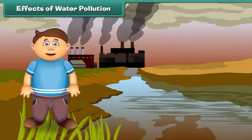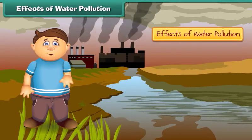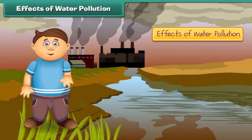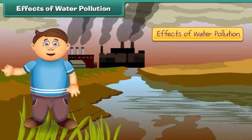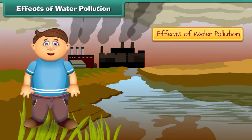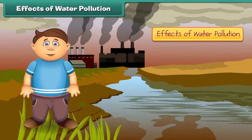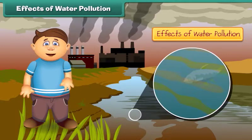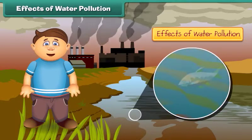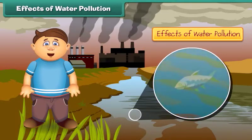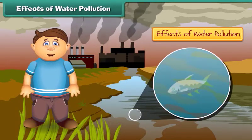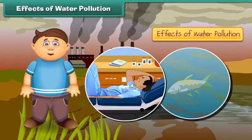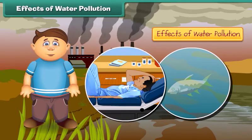What are its effects? Poisonous chemicals released from factories and industries enter the water bodies, due to which marine life is getting affected. If we consume such fish, we will also fall ill.